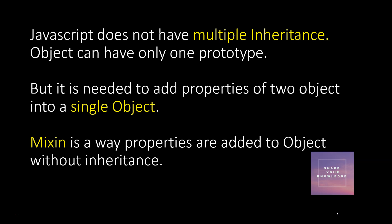In JavaScript, multiple inheritance is not possible — we have only multi-level inheritance, because an object can have only a single prototype. You can assign only a single object to the prototype. If you want properties from multiple objects added to your object, that is possible through mixins. Mixin is not a way of inheritance — it is like adding the properties of a mixin object or mixin class to this object.